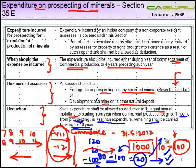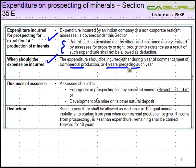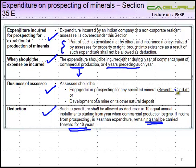To summarize Section 35E: expenditure incurred for prospecting, extraction, or production of minerals is allowed as a deduction. Any part met by others or received as insurance for property created from such expenditure must be reduced. Expenses must be incurred in the year commercial production begins or the four preceding years. The deduction is spread over 10 years from commencement of commercial production, and any unabsorbed balance is carried forward for 10 years.